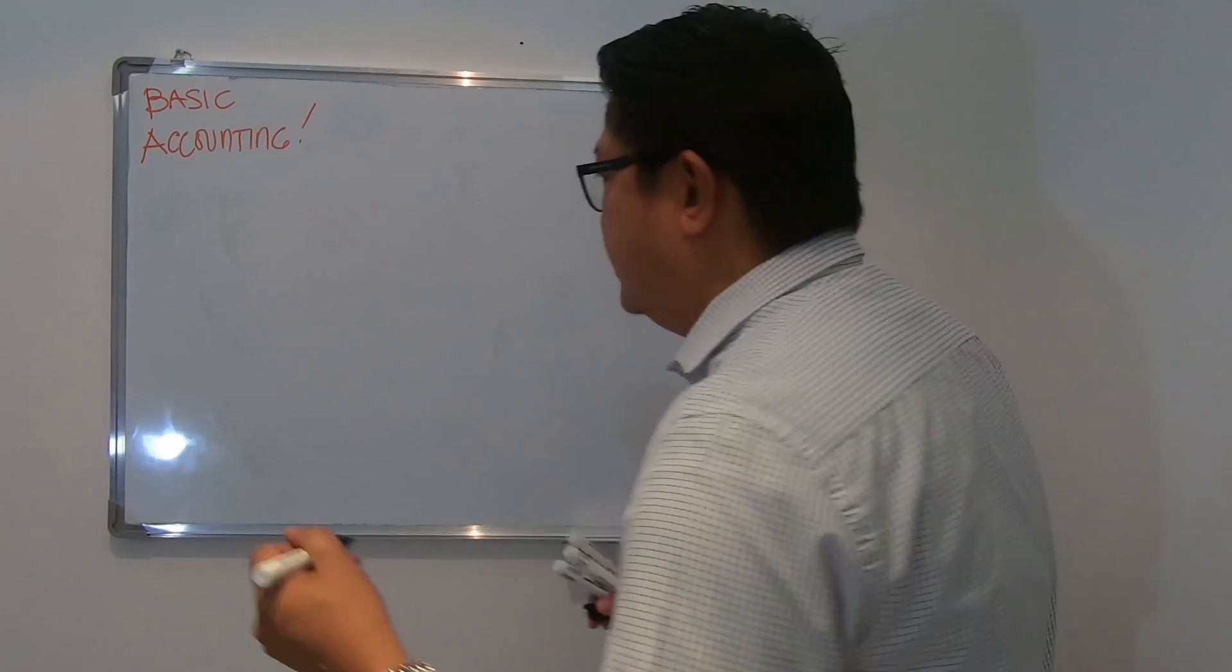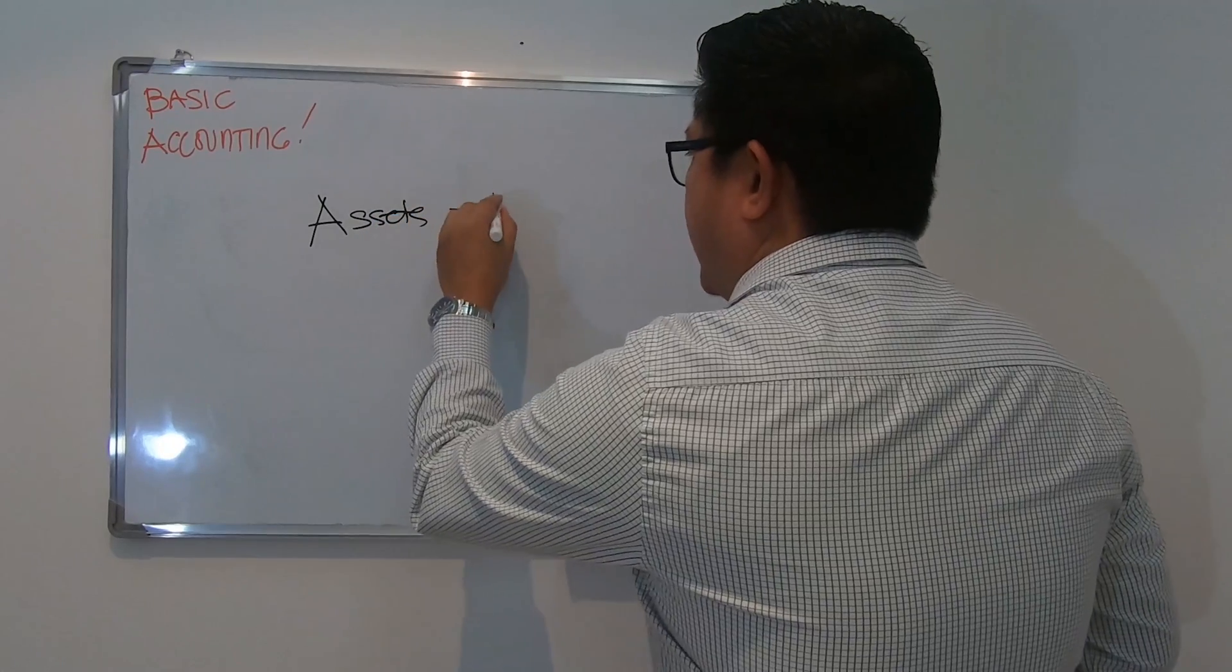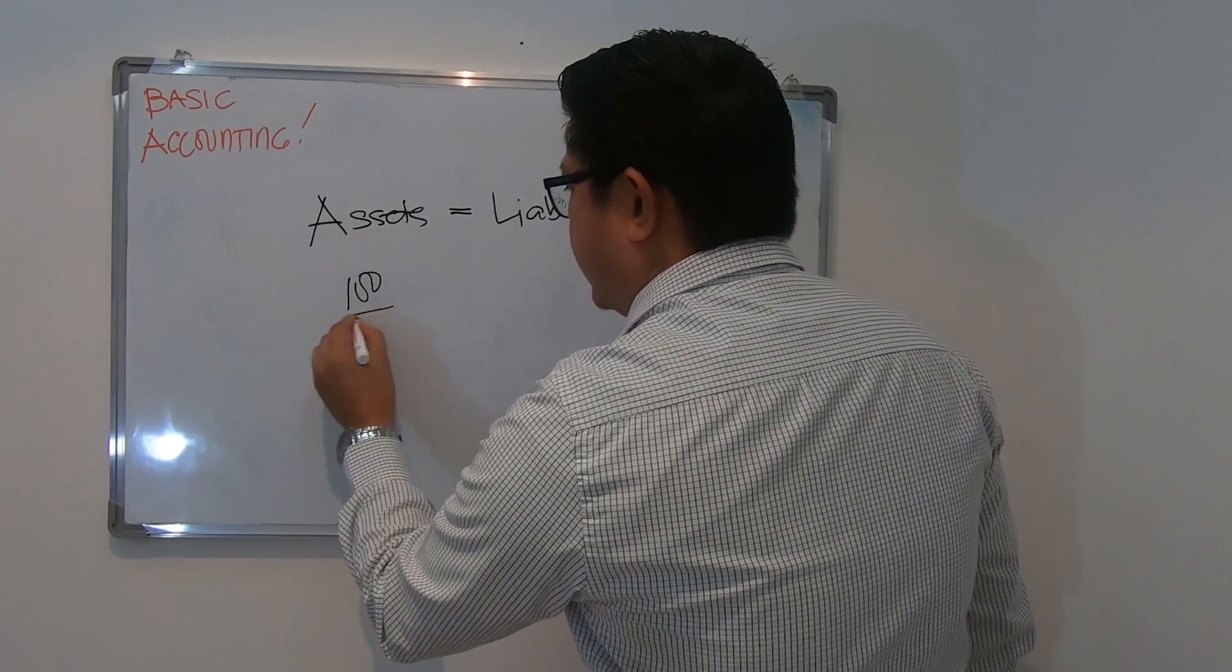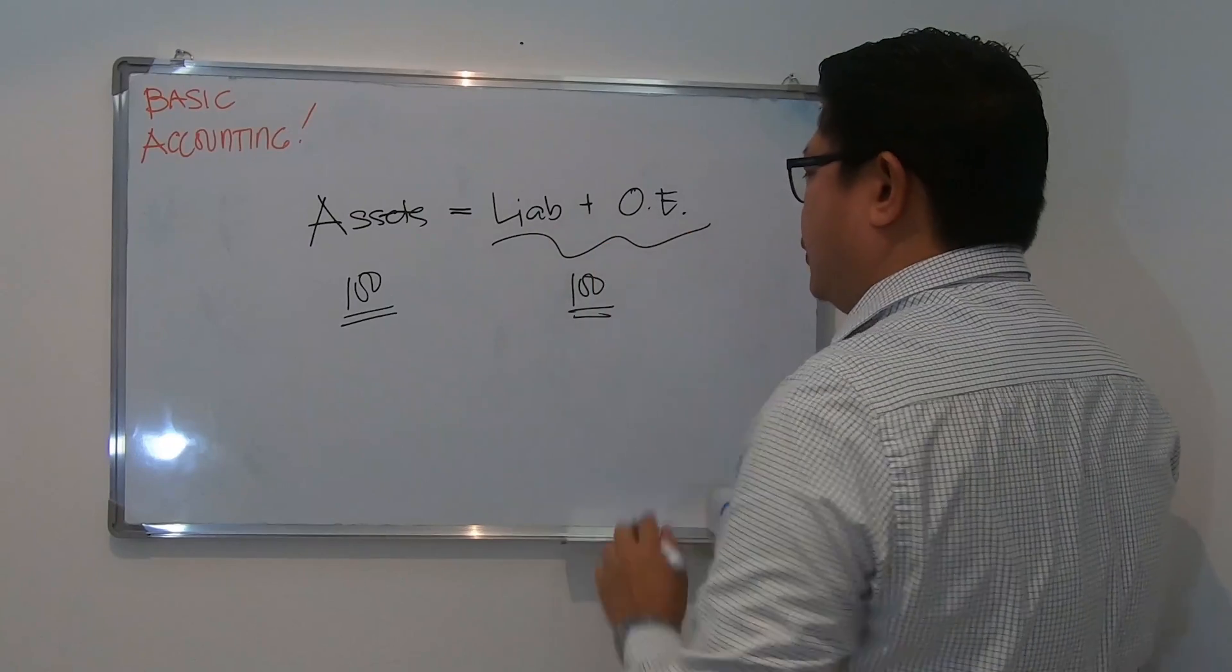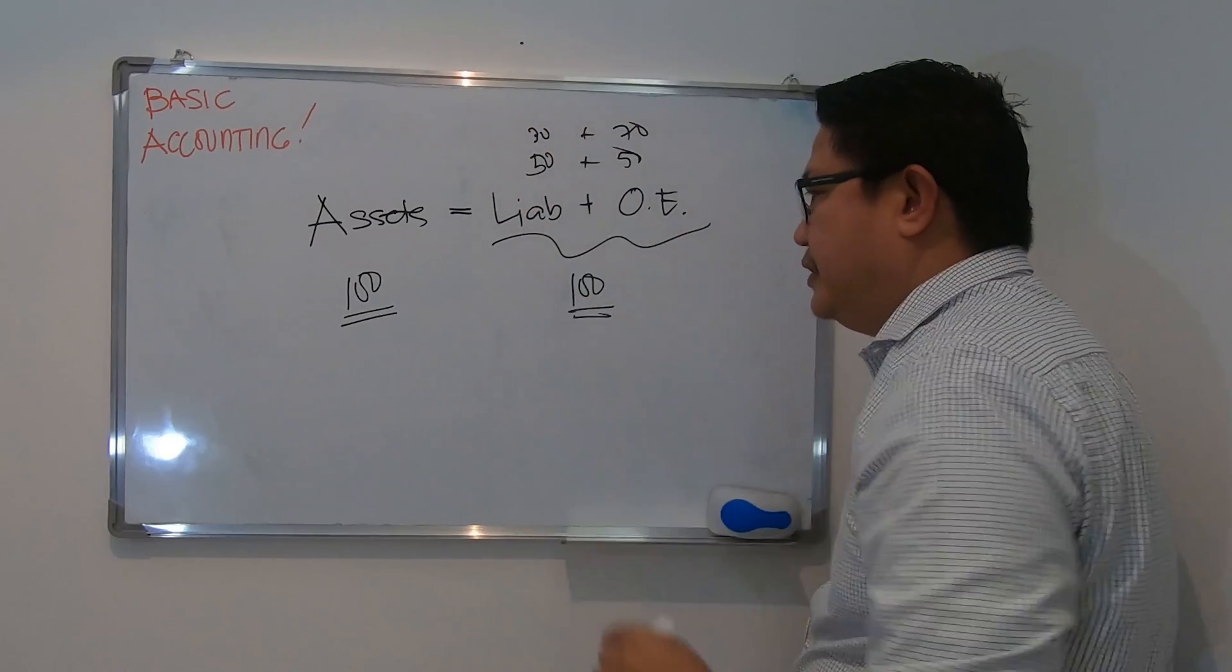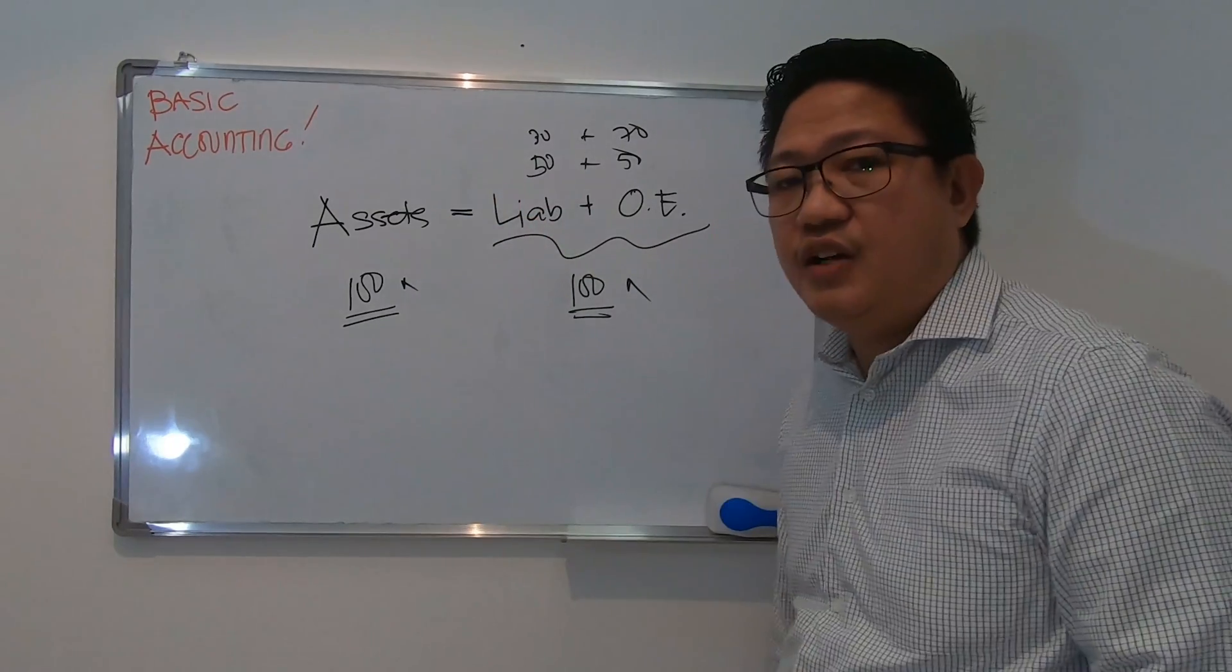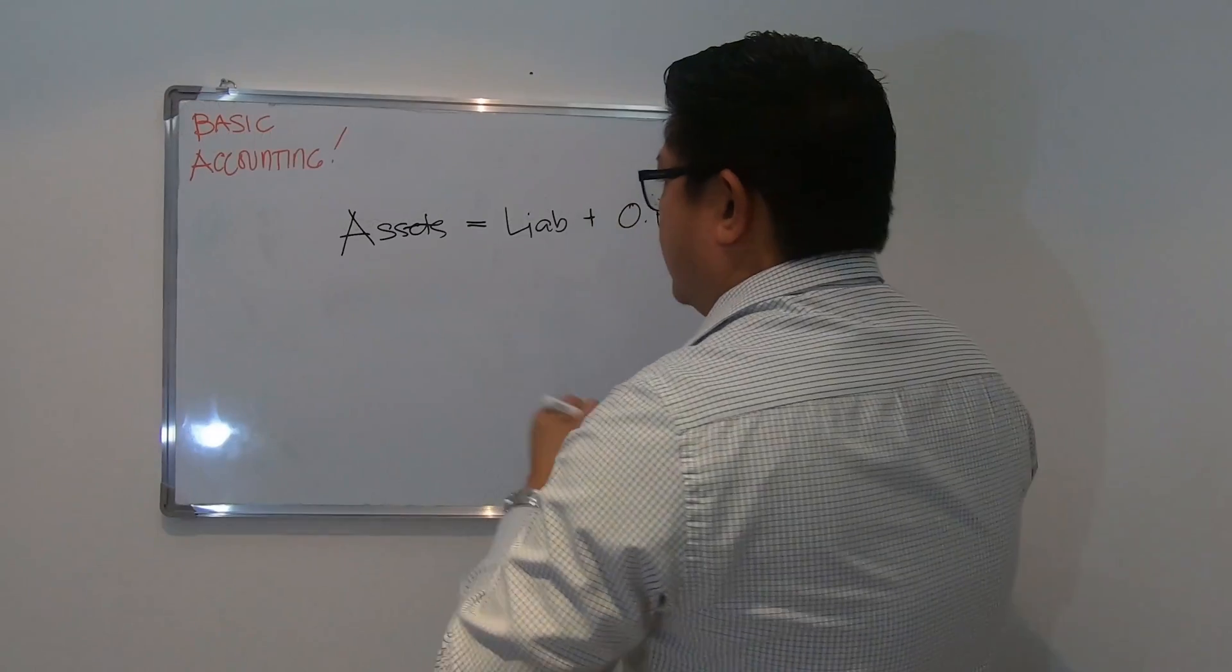In accounting, we have the accounting equation. We have assets equals liabilities plus owner's equity. Meaning if you have 100 in your assets, you should have a total of 100 also as a combination of liability and owner's equity. It could be 50 plus 50, 30 plus 70, whatever. So the total should be equal to the assets. That is one of the concepts of the basic accounting equation.